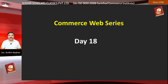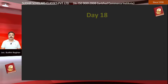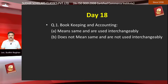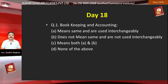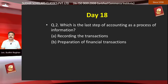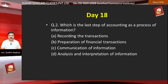Now we start day 18. First question is on your screen: Bookkeeping and accounting — Option A, means same and are used interchangeably; Option B, does not mean same and are not used interchangeably; Option C, means both A and B; Option D, none of the above. Which is the last step of accounting as a process of information? Option A, recording the transaction; Option B, preparation of financial statements; Option C, communication of information; Option D, analysis and interpretation of information.